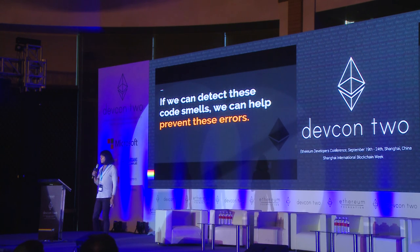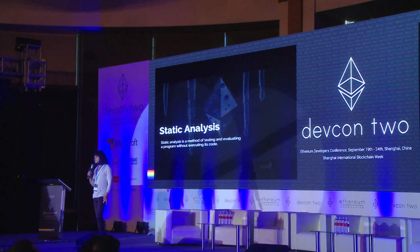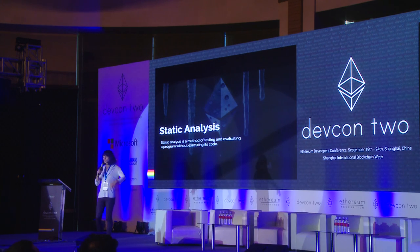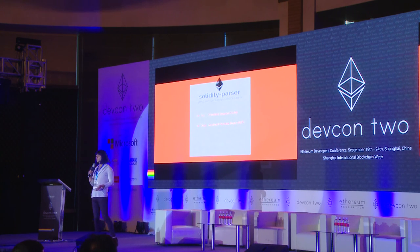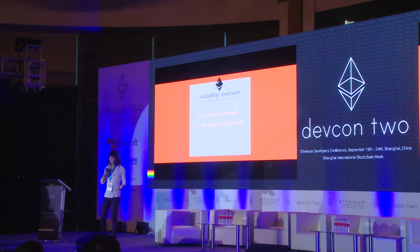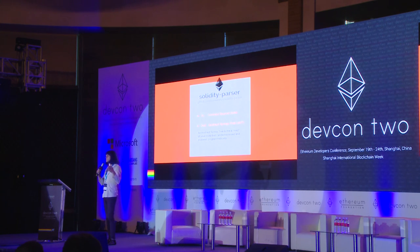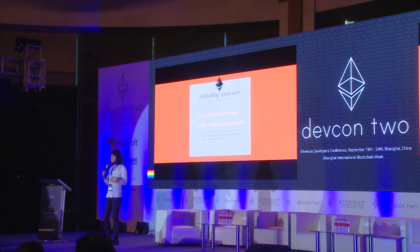There are a couple of ways of detecting code smells. Static analysis is a method of testing and evaluating a program without executing its code. If you can look at the source code of a program and make some observations about it, that's going to be really powerful. The first step in static analysis is parsing the code — you take your source code and get out an abstract syntax tree, which you can think of like a map of the code. Your code has functions and state variables, and if you have a map of all those functions that you can explore programmatically, then you can write code that analyzes your code — code that reads code. That's static analysis.